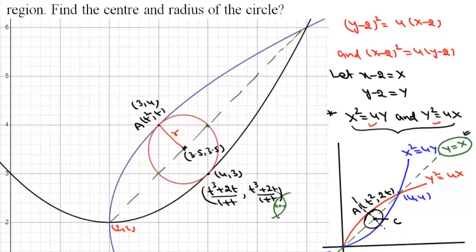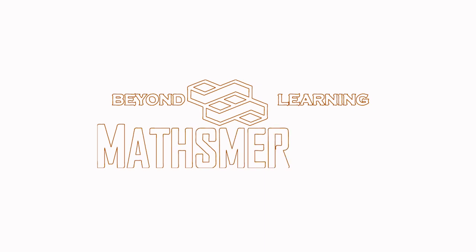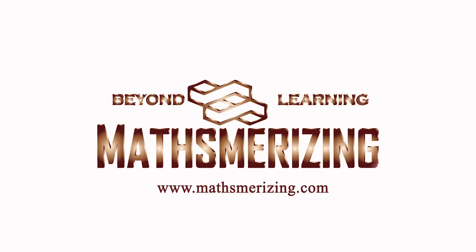I'd like to thank Ankit who pointed out the error in the previous solution. The problem with the previous solution was the assumption of symmetry: though it is correct that the center lies on Y = X, it won't be at (2,2) because these are not two intersecting circles — they are intersecting parabolas. As we can see, they slope differently at the two intersection points: at (2,2) we have one angle and at (4,4) we have another.